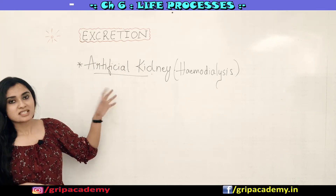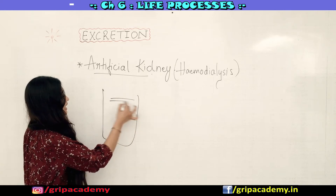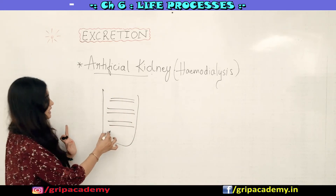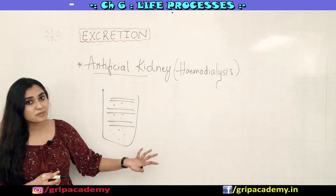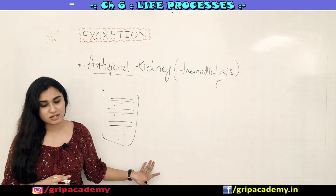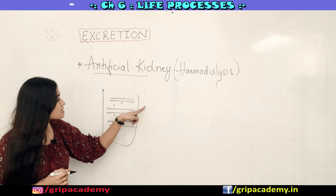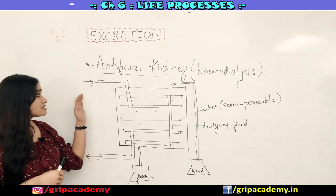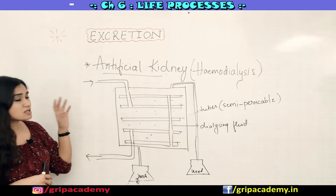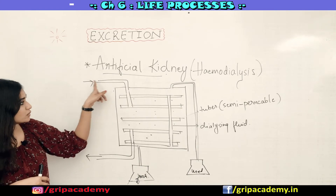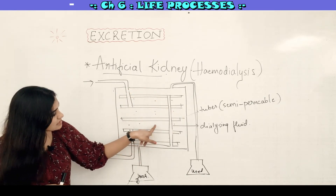So what is an artificial kidney? An artificial kidney acts like a kidney — it consists of several tubular structures which are suspended in a dialyzing fluid. This dialyzing fluid has an osmotic pressure similar to blood, except it does not contain any nitrogenous waste. This is how the artificial kidney looks like — it consists of several tubes which have a semi-permeable lining. The patient's blood is allowed to pass through these tubes, which are semi-permeable in nature and suspended in the dialyzing fluid.